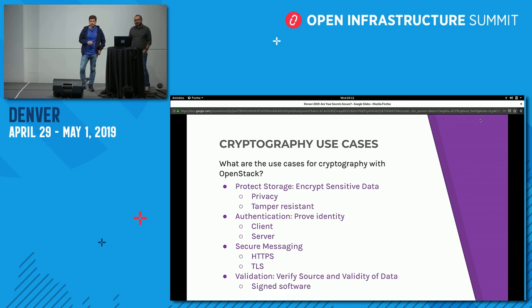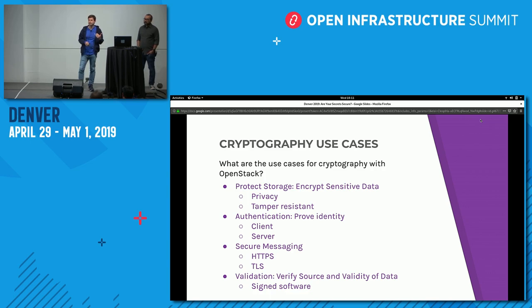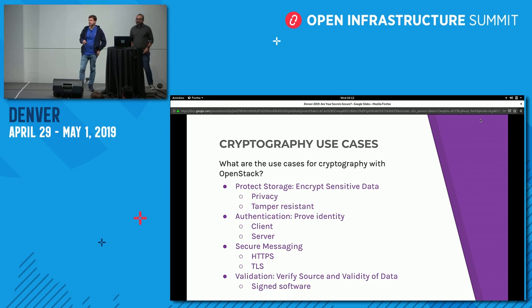A second use case for encryption is authentication. Knowing a secret — whether it's a passphrase or part of a key pair — can be used to prove your identity, either from the client side with a passphrase or SSH key, or from the server side with an X.509 certificate and a private key to prove authenticity.